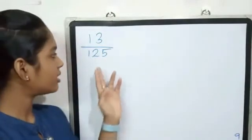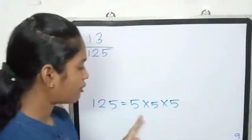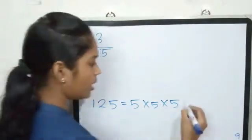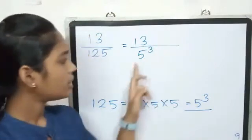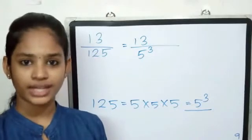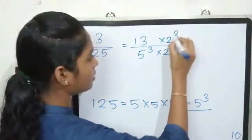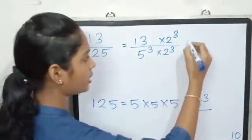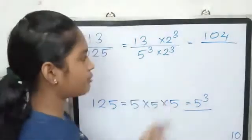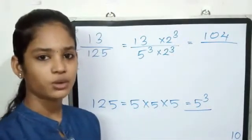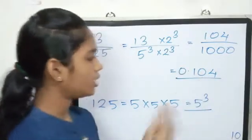Last example: 13 by 125. 125 will be 5 into 5 into 5 — 5 cubed. If there is 2, we will multiply by 2 cubed in the numerator and denominator. 2 cubes are 8. 8 into 13 is 104, divided by 5 cubed 125 into 2 cubed 8, which is 1000. Decimal formula: 0.104.